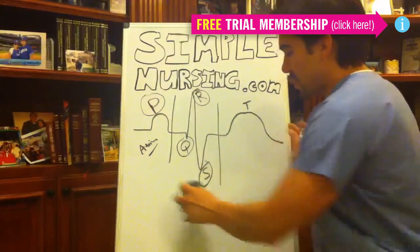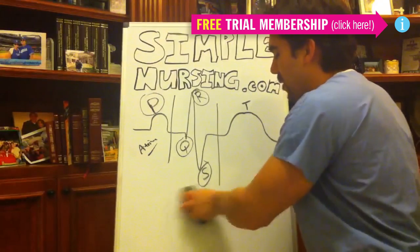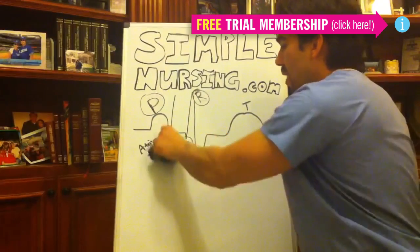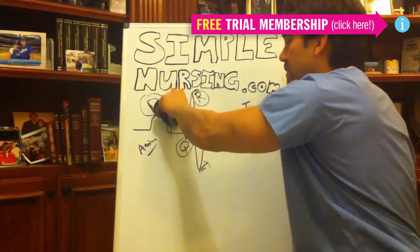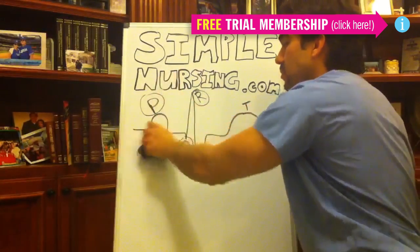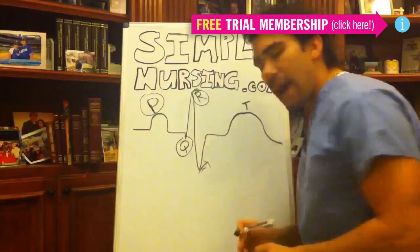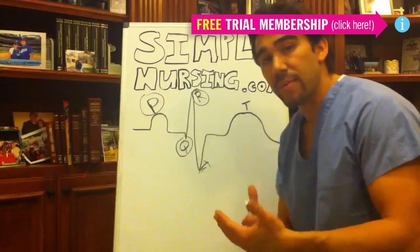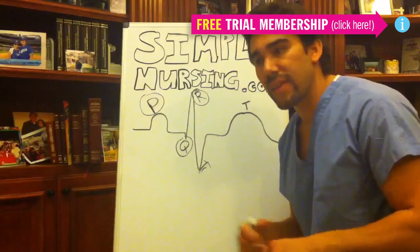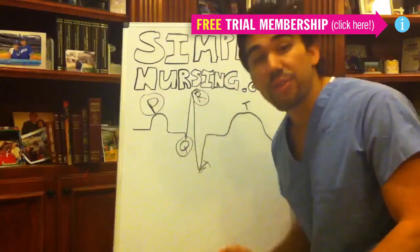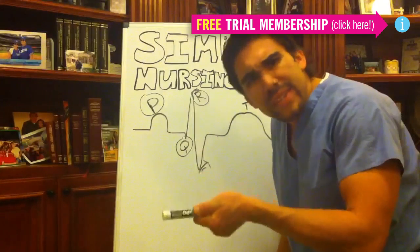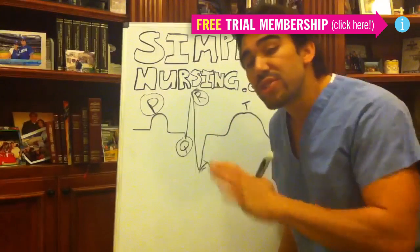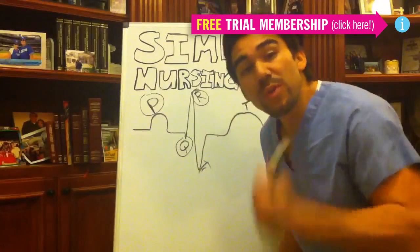So when you're looking to interpret a rhythm — and I'm sure you guys have probably seen one in the clinical setting — I want you to use these five tips as criteria before you even start thinking, oh, that's atrial fibrillation, or that's atrial flutter, or that's V-tach, or that looks like a bundle branch block. Don't jump into it.